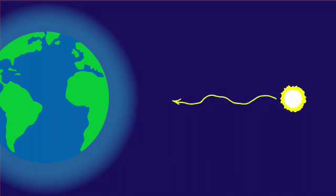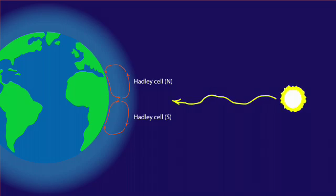This sets in motion a large-scale vertical circulation called a Hadley cell. There's a north Hadley cell and a south Hadley cell. The vertical circulation of the Hadley cell sets in motion other patterns of circulation at higher latitudes.